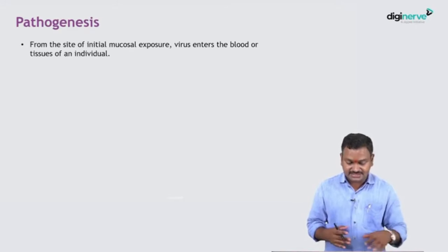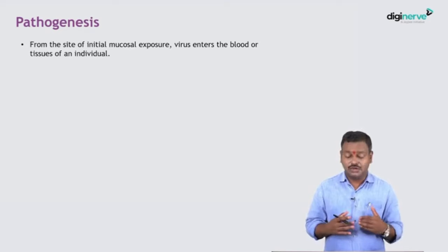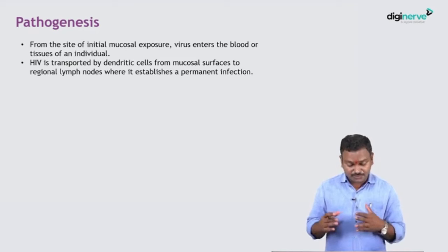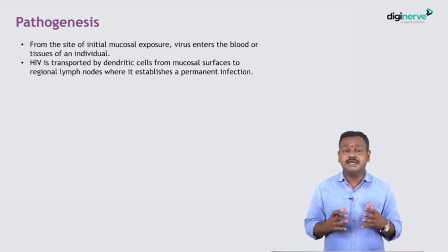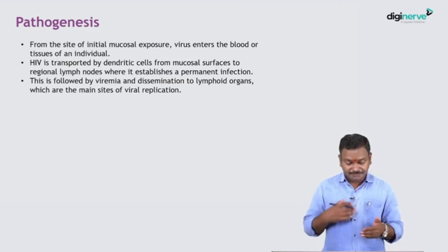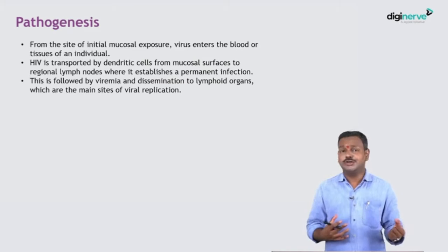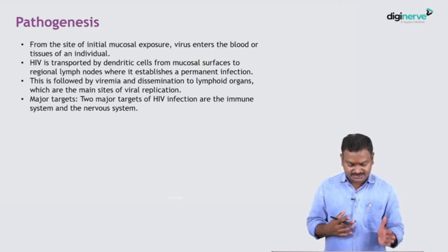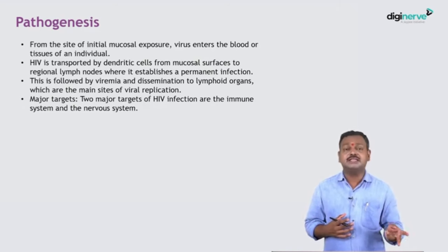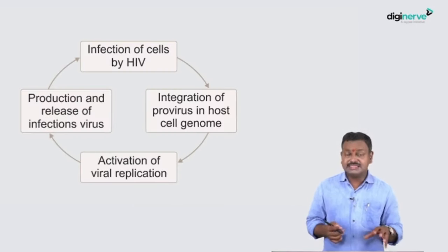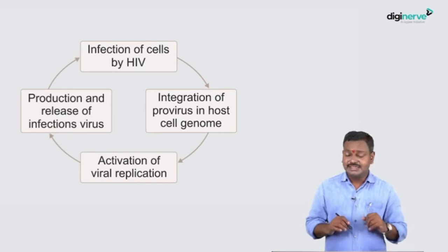In pathogenesis, from the site of mucosal exposure the virus enters blood or tissue, is transported by dendritic cells to regional lymph nodes where it establishes permanent infection. This is followed by viremia and dissemination to lymphoid organs — the primary sites of replication — causing lymphadenopathy and organomegaly. The major targets of HIV are the immune system and the nervous system. Other systems are damaged by opportunistic infections or treatment effects.